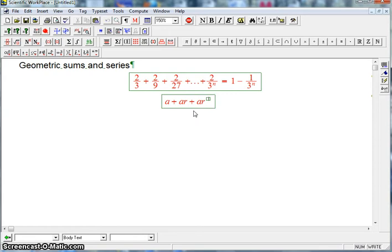The pattern of a geometric sequence is that each of the terms is just R times the previous one, where R is some fixed number. And then let's take it up to, and now I'm going to use, follow the book's lead.